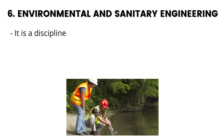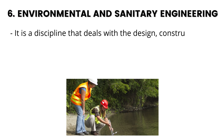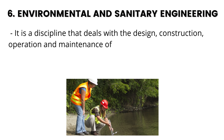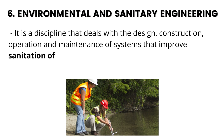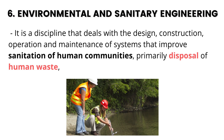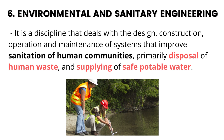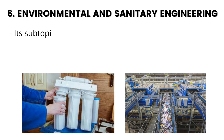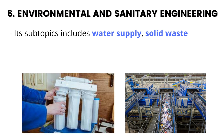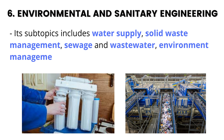6. Environmental and Sanitary Engineering. It is a discipline that deals with the design, construction, operation and maintenance of systems that improve sanitation of human communities, primarily disposal of human waste, and supplying of safe potable water. Its subtopics include water supply, solid waste management, sewage and wastewater, environment management and public health engineering.